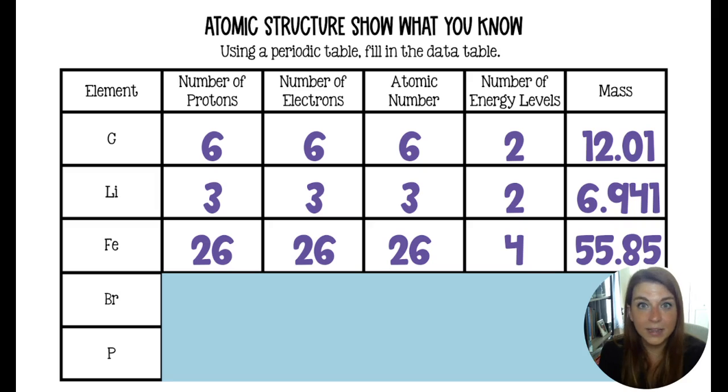All right, so looking at these answers, lithium is number three on the periodic table. So its atomic number is three, the number of protons is three, and the number of electrons, all three. It is in the second period or the second row of the periodic table. So its electrons are organized in two energy levels, and its mass is 6.941.